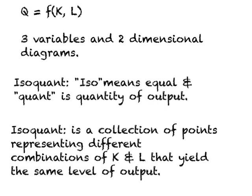We are trying to understand production and cost in the long run. In the previous video, what you watched is the production function in the long run. And as a specific example, I introduced you to the Cobb-Douglas production function. Let us look at the production function once again, where quantity of output is a function of capital and labor.